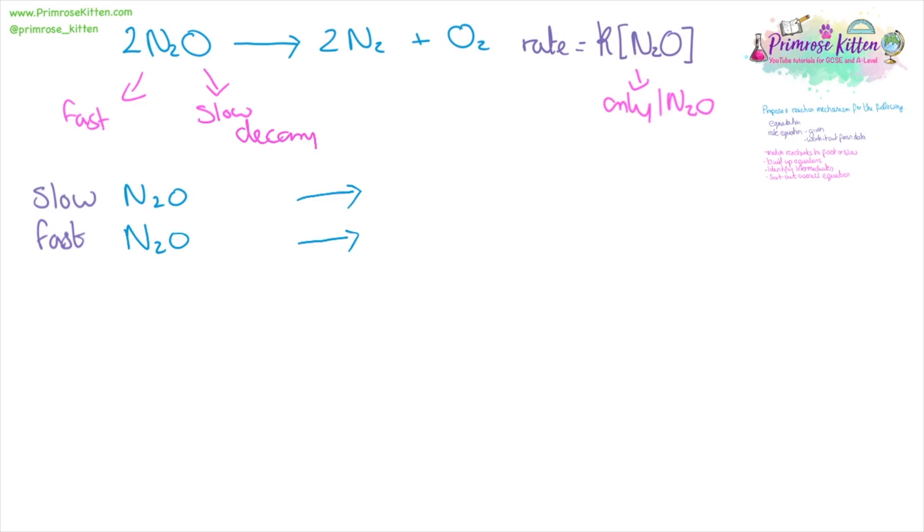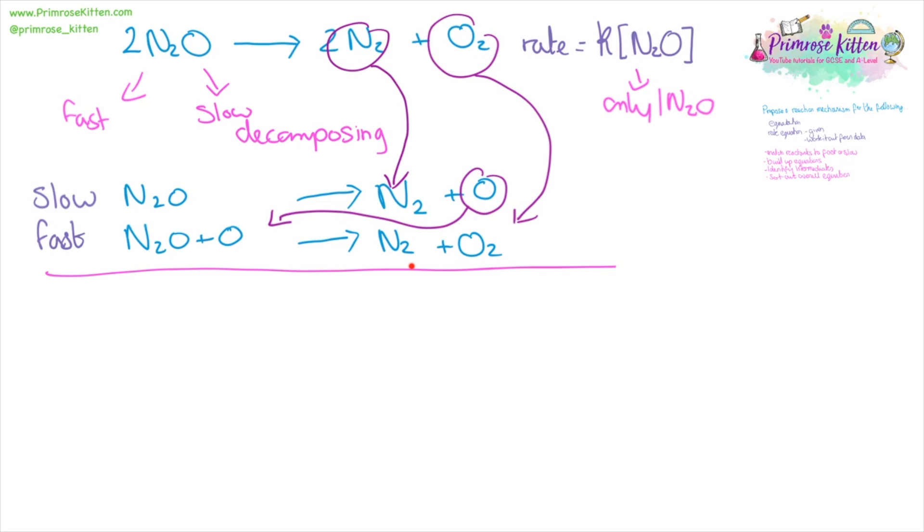Now NO2 being in the slow step, and being the only thing in the slow step, means that it must be decomposing, it must be broken down. We can see that nitrogen is going to be something that's broken down to, and then oxygen's what it's left over, and that is our intermediate. Putting our intermediate into our fast step, we can see that we get given, or we can work out, that nitrogen and oxygen are going to be the products.